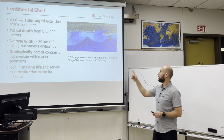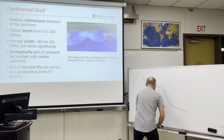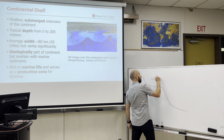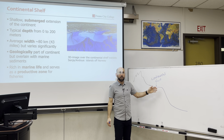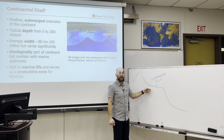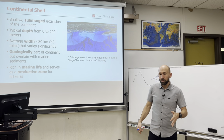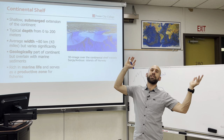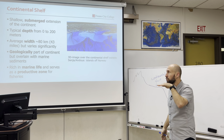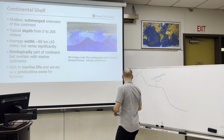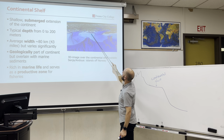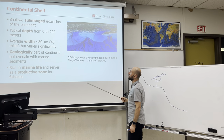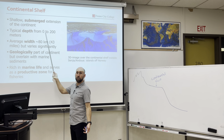Feature number one is the continental shelf. This is basically where the land becomes the sea — it's the shoreline. The shore moves up and down with the tide, and if you've ever been swimming in the ocean, you walk out and there's a nice gentle slope that is the submerged extension of the continent. Here in this digital elevation model, this would be the continental shelf. The typical depth goes from zero to 200 meters.